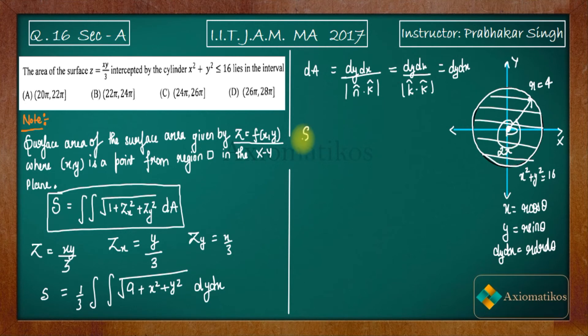So S can now be written as 1 by 3 times of 0 to 2π, 0 to 4 under root of 9 plus X square plus Y square. Now what is X square plus Y square? It is R square. So you will get R square. Now you have R dR dθ. So multiply R on the outside and you have this double integral. Now it is a very simple integral. How you are going to solve it?